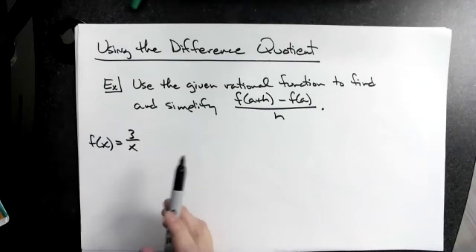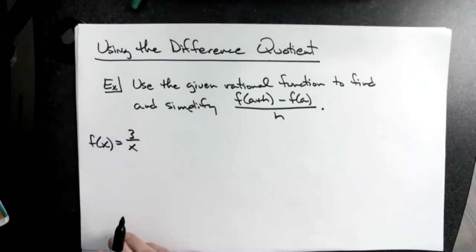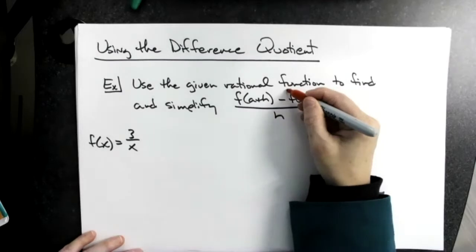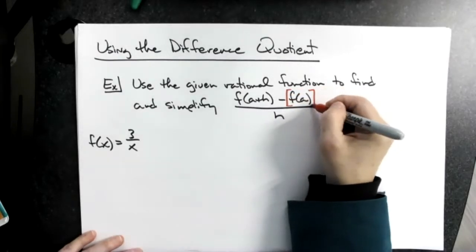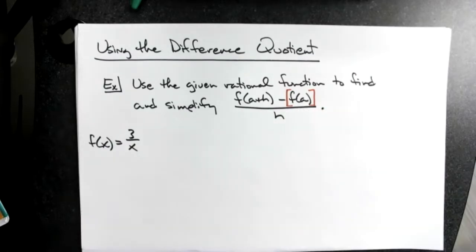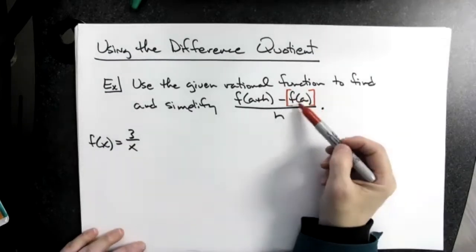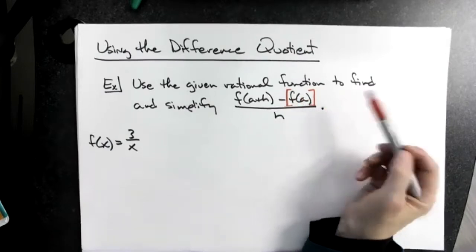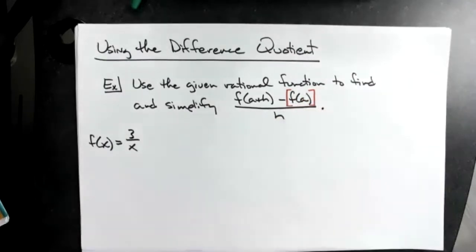We'll do a relatively simple rational function as opposed to a complicated one. Now, remember when we worked with the difference quotient before — even though it's not in the formula, it's very helpful to go ahead and put a set of brackets there. On the slim chance that whatever you form inside has more than one term, you'll need to change signs, and that helps you not drop a negative.